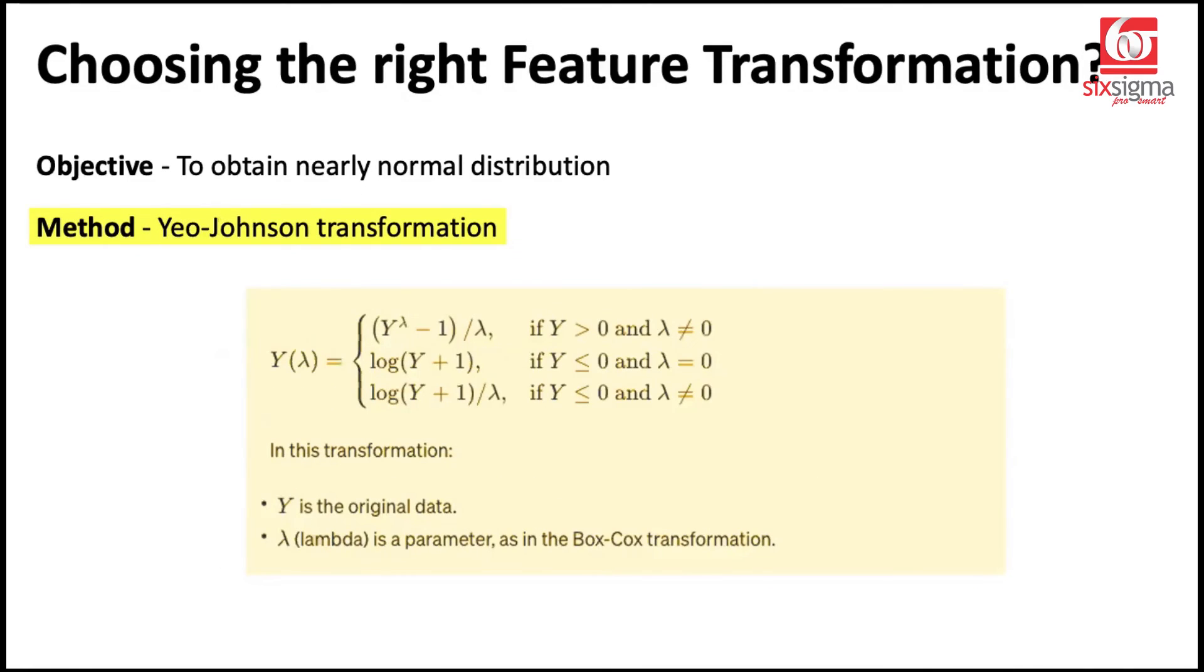And you can see this is a modified form of the Box-Cox transformation. It has some additions here to ensure that the values, even if they go a little below zero, would not really cause a problem. This lambda is the same as we saw in case of Box-Cox transformation.